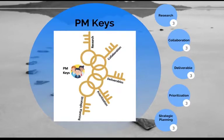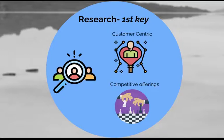As depicted in this diagram, research, collaboration, deliverables, prioritization, and strategic planning are the five keys of a product manager. Now let us take a bird's-eye view at each of these keys. Research is the first key. A PM needs to continually keep an eye on the product-related surroundings to assess what works best for the customers.